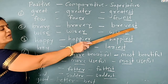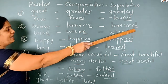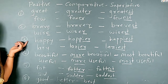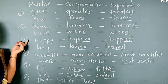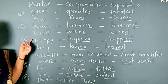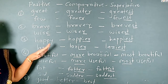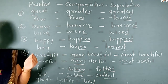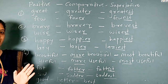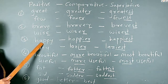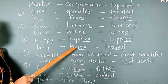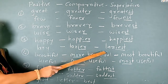Rule number 3: if the word ends with the letter Y, we change Y to I and add ER for comparative and EST for superlative. Comparative form ends in -ier, superlative in -iest. For example: happy, happier, happiest. Lazy, lazier, laziest.